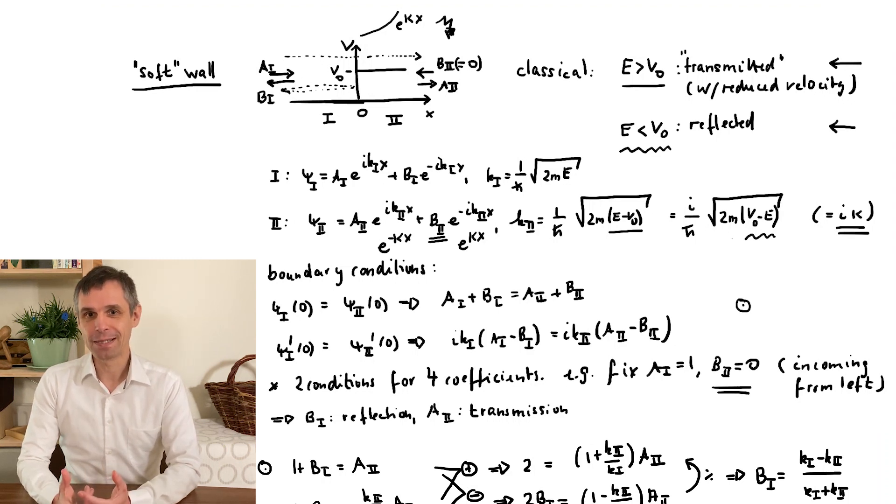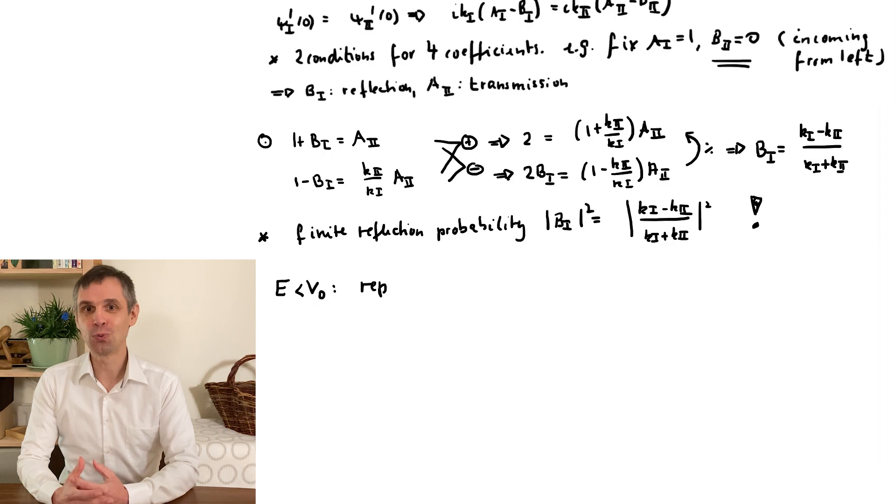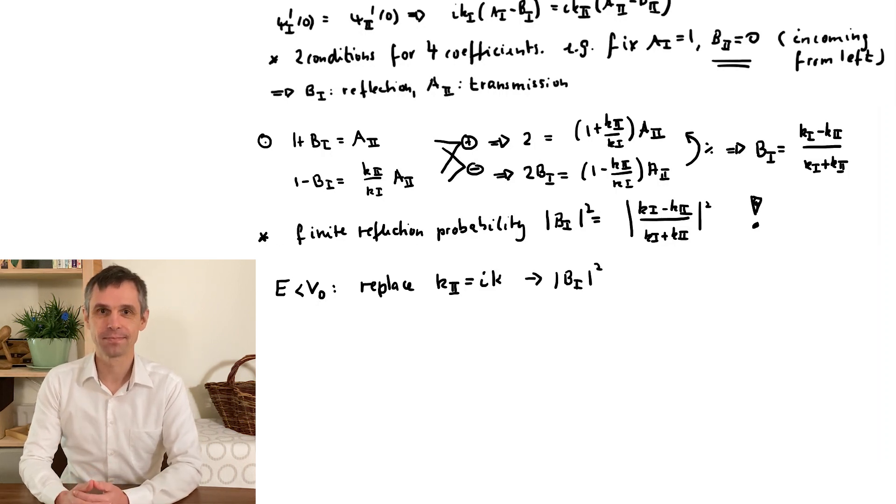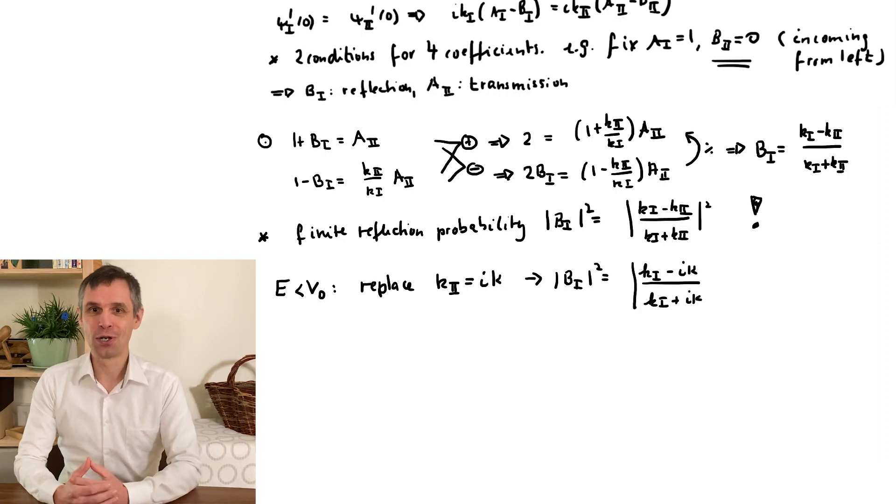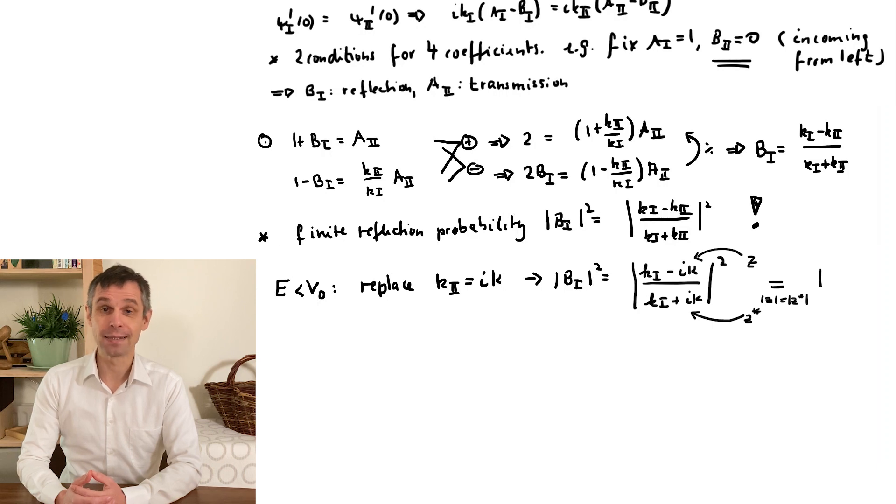Well, in any case, it means that by our algebraic steps we already solved this problem. We just need to replace the wavenumber in region 2 by i kappa and we are done. And now b1 is of the form of a complex number divided by its complex conjugate, but then its absolute value squared is just 1. So, the particle is always reflected, just as in the classical case.